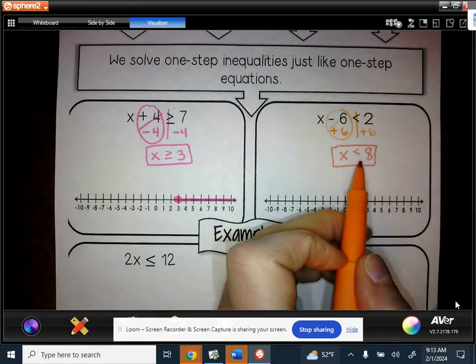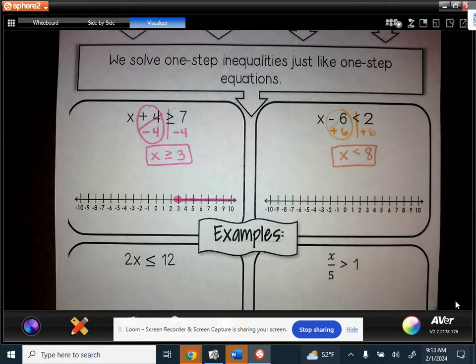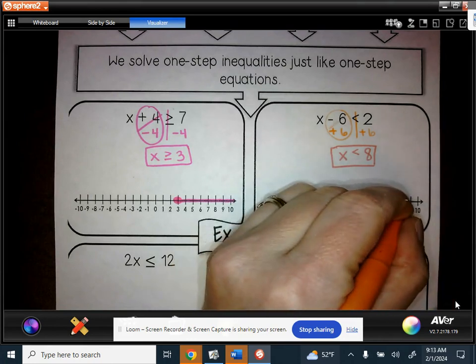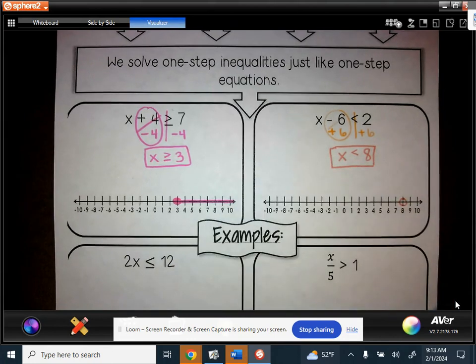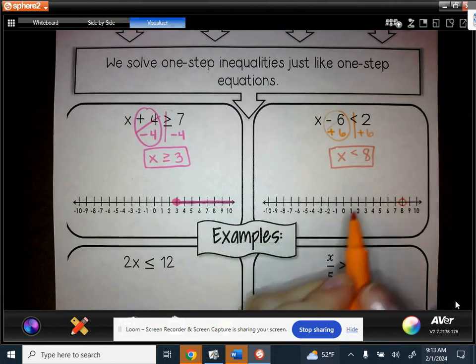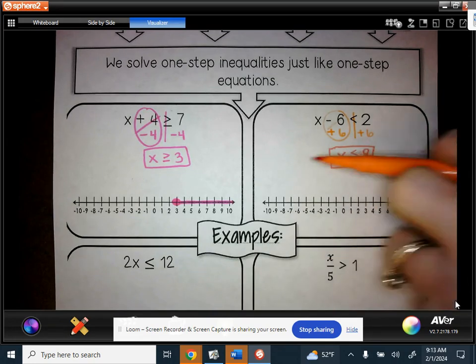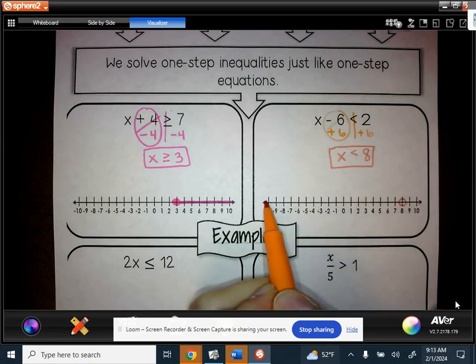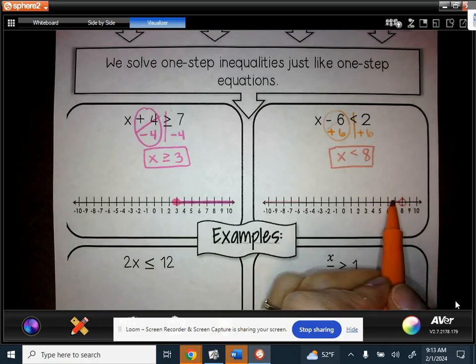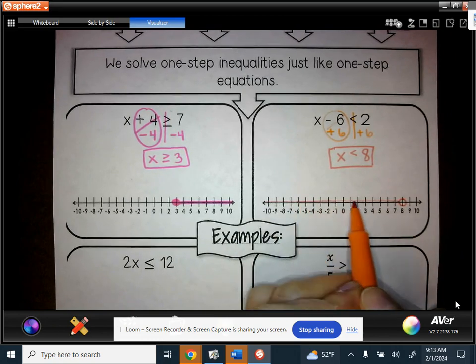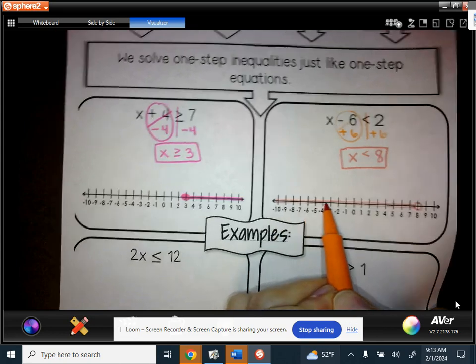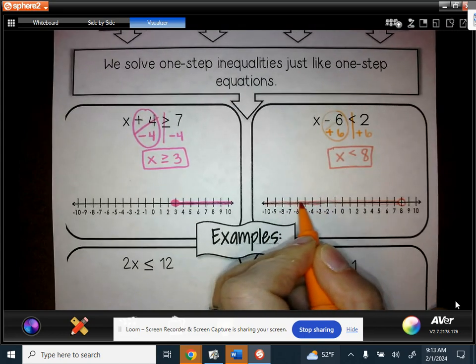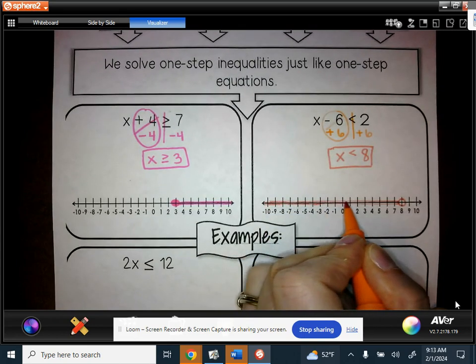And there's no line underneath here. So no line, no mouth guard. So we're going to draw an open circle this time because we're not including the actual number 8, and then the symbol less than points to the left, so we want to make sure that we shade everything going to the left on our number line because all of these are values that are less than 8.